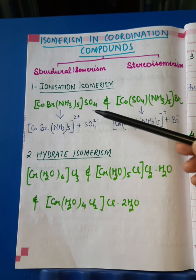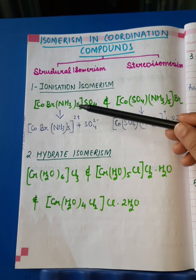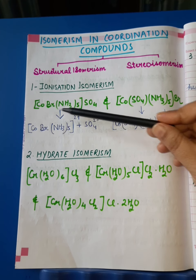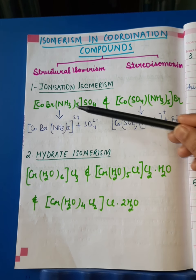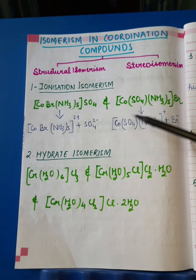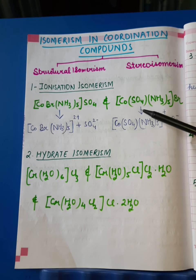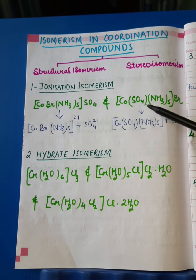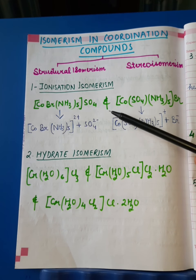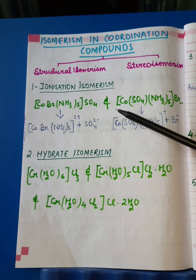Taking two complex examples: the first is tetraamine bromido cobalt(III) sulfate, and the second is tetraamine sulfato cobalt(III) bromide. In these two complexes, all the atoms are the same and both share the same molecular formula.